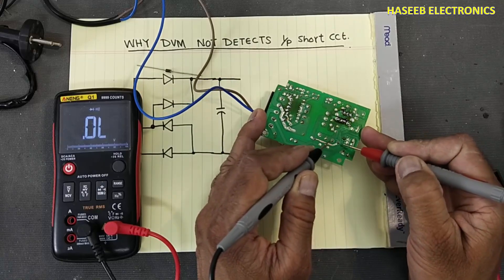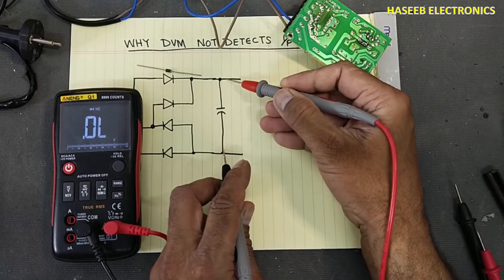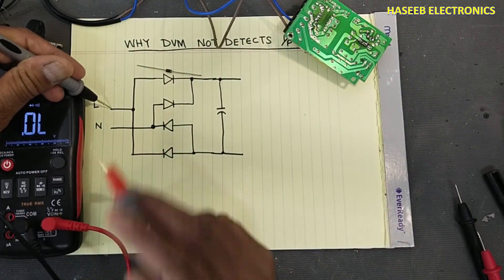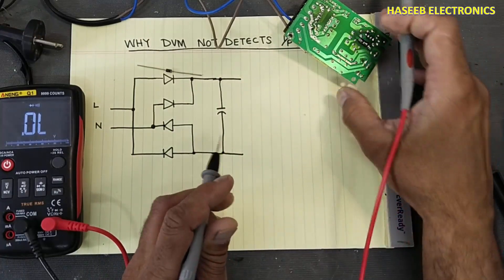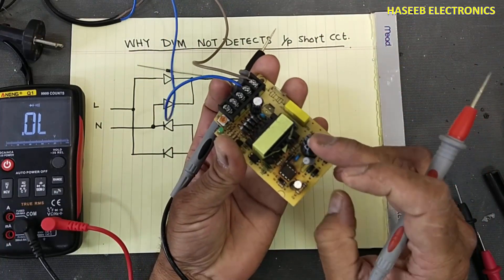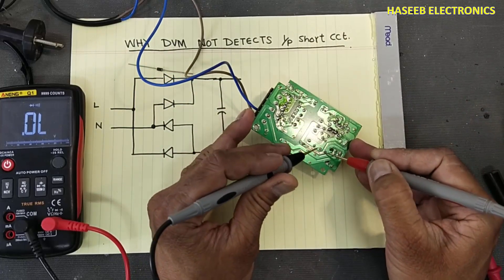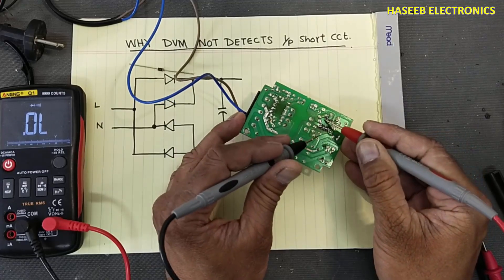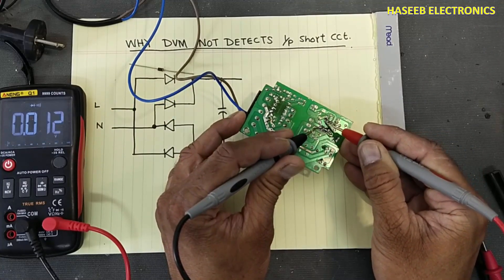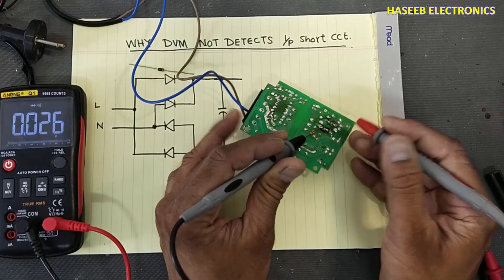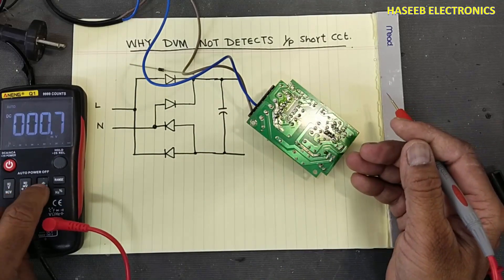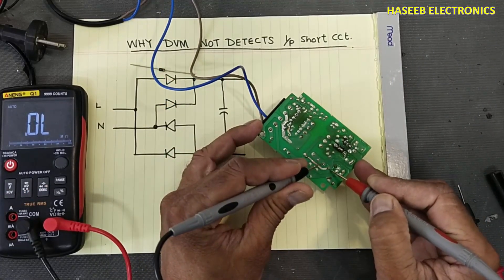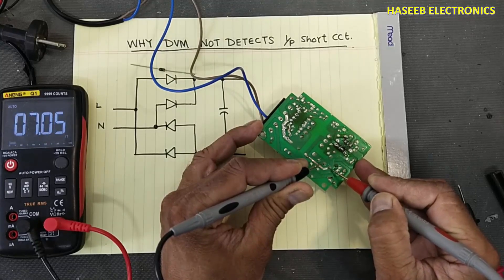It has a short circuit in the DC rail at this point. If we test the input resistance, it is high. But if we check at the capacitor terminal, it is short — the ground line is reaching the source, so drain to source it is short circuit. And if we check the resistance at the capacitor end, it is just only seven ohms.